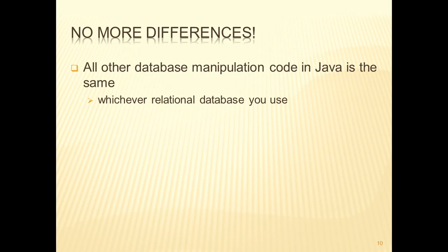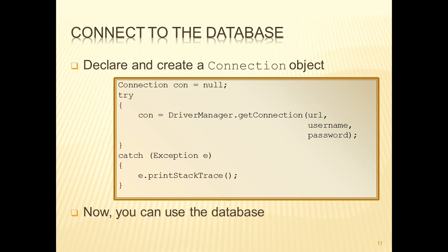And that's it in terms of differences. From here on, what we'll be looking at in this lecture is going to be the same whatever relational database you're using, so long as it supports standard SQL. We have to import the java.sql package — remember, a package is just a library of classes we can use. Within that package we have a Connection class, and to set up the connection from our program to the database, we declare a Connection object — we're calling it 'con' — initialized as null.